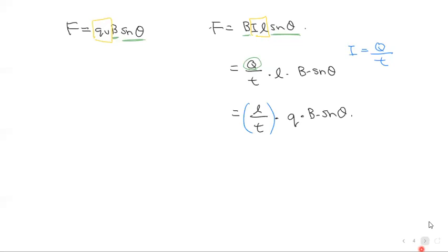And let's think of what L over T is. Remember, L is the length of the wire in the magnetic field. So you take a length of your wire and you divide it by T. That's really just measuring velocity. And so really, we're just saying this is v times Q B sine theta.